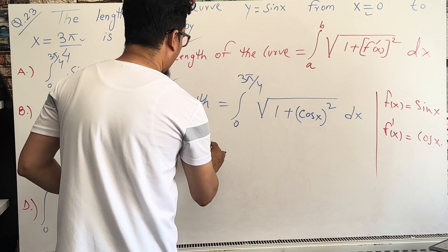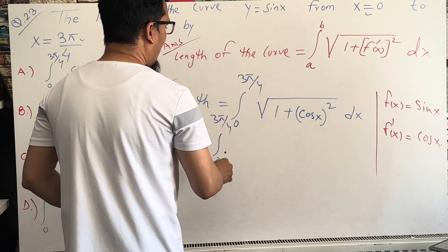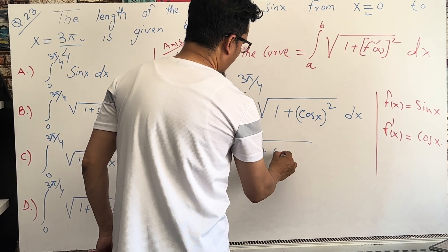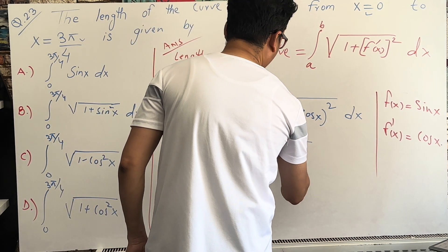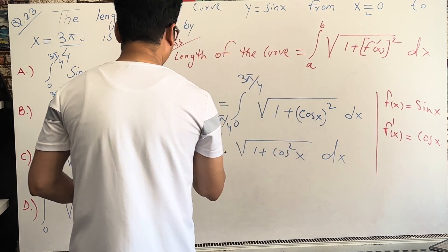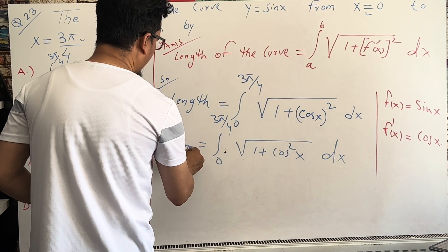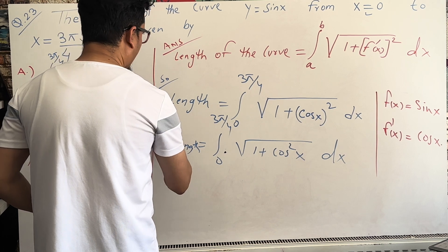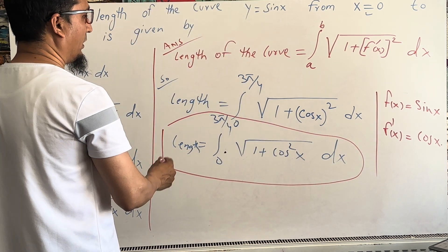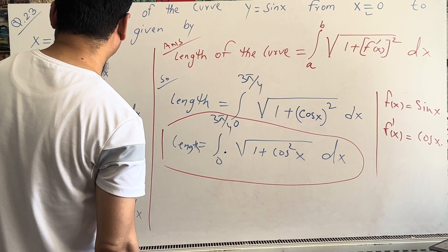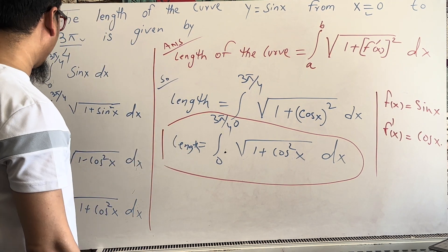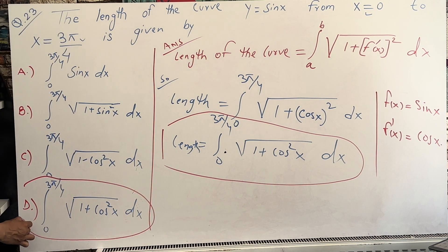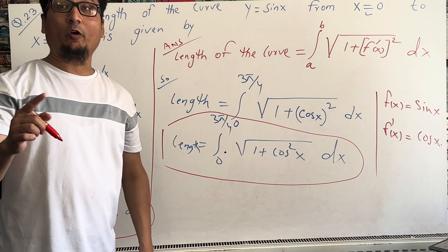So you can see here 0 to 3π/4, the answer is 1 plus cos squared x, dx. This is the length. I hope you all understand because this is easy. You just put this value in the formula and find the answer. So which one is 0 to 3π/4, square root of 1 plus cos squared x, dx. So answer D is correct.